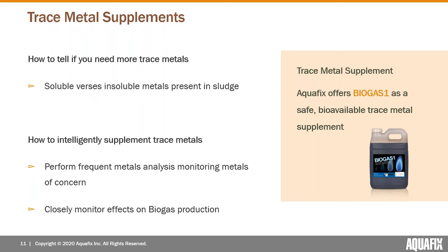For metals analysis, look for soluble versus insoluble metals — you can use a centrifuge to remove heavier solids and analyze the supernatant. Influent loading measurements are always important; monitor COD, nitrogen, and phosphorus for fluctuation. If possible, communicate with upstream high-COD sources to level out their flow. Occasional nitrogen or phosphorus deficiency can usually be efficiently supplemented.